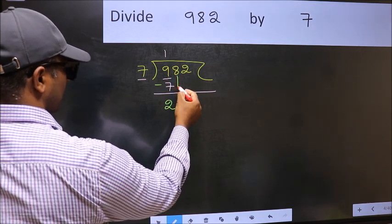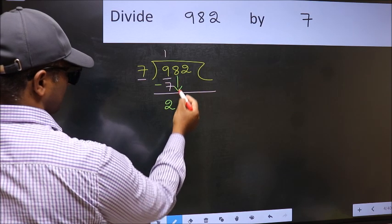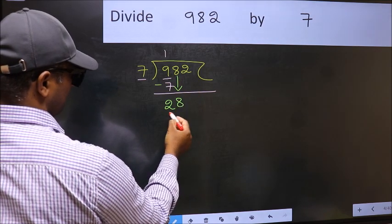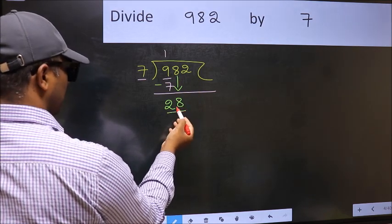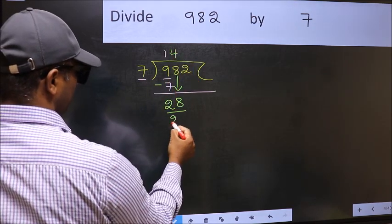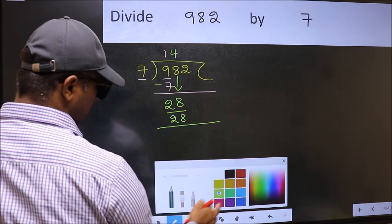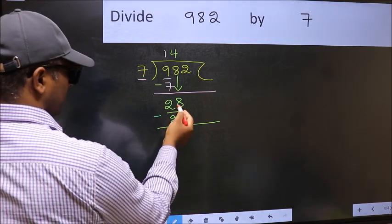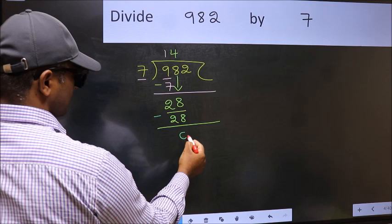After this, bring down the beside number. So 8 down. Now 28. When do we get 28 in the 7 table? 7 fours, 28. Now you should subtract. 28 minus 28, 0.